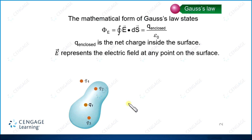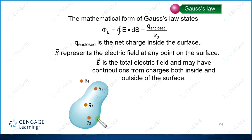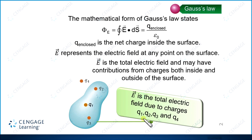That means in this diagram, the net electric field at any point situated on this closed surface will have the contribution of Q1, Q2, Q3 as well as Q4. Now let us move to a few illustrations, and through these coming illustrations we will learn the application of Gauss Law. Let us move to Illustration Number 1.